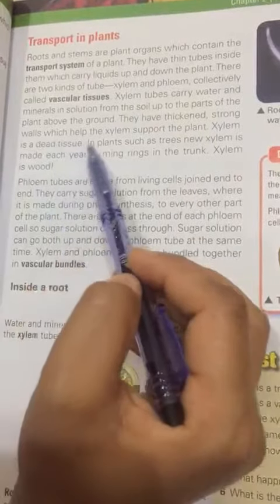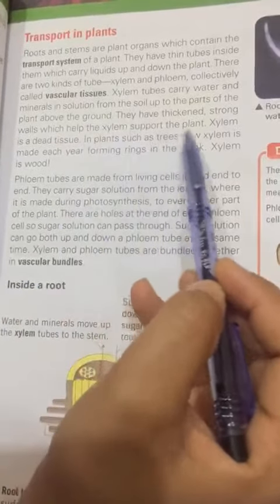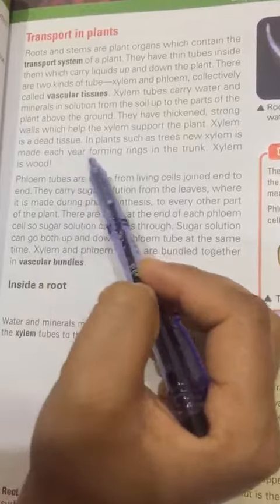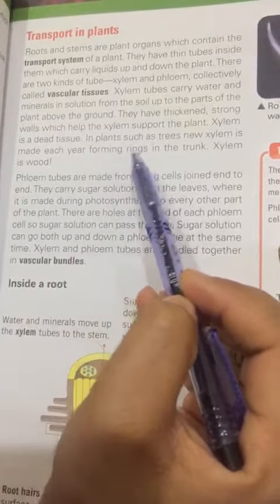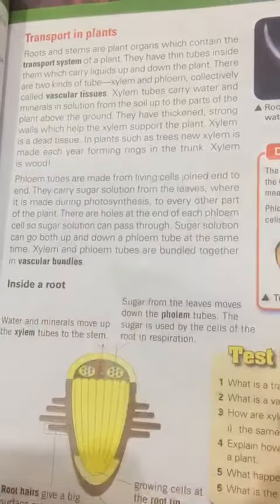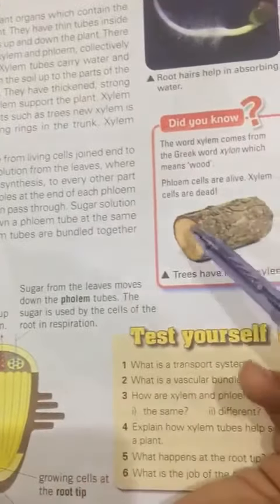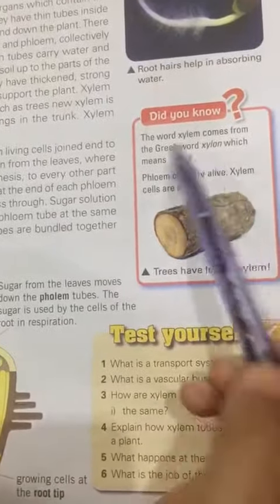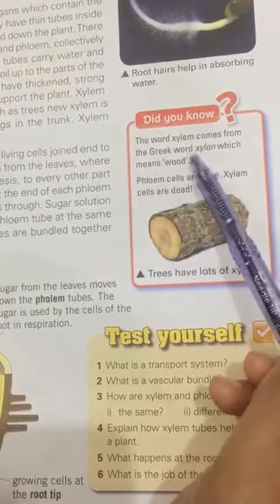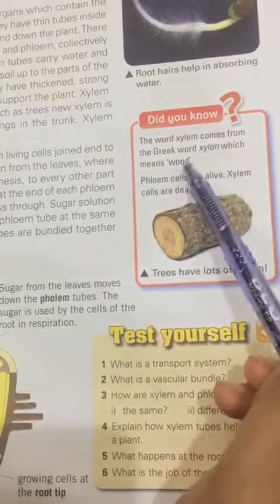Xylem is a dead tissue in plants such as trees. New xylem is made each year, forming rings in the trunk. Xylem is wood — the word xylem comes from the Greek word which means wood.